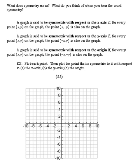Okay, first of all, our very first example here says a graph is said to be symmetric with respect to the x-axis if for every point (x,y) on the graph, the point (x,-y) is also on the graph. So let's see what that looks like.